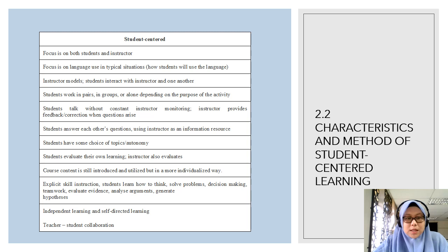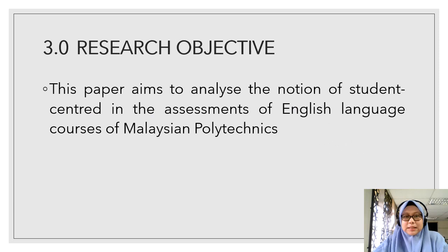Explicit skills instruction includes: students learn how to think, solve problems, decision making, teamwork, evaluate evidence, analyze arguments, generate hypothesis, independent learning and self-directed learning, and lastly, teacher-student collaboration.